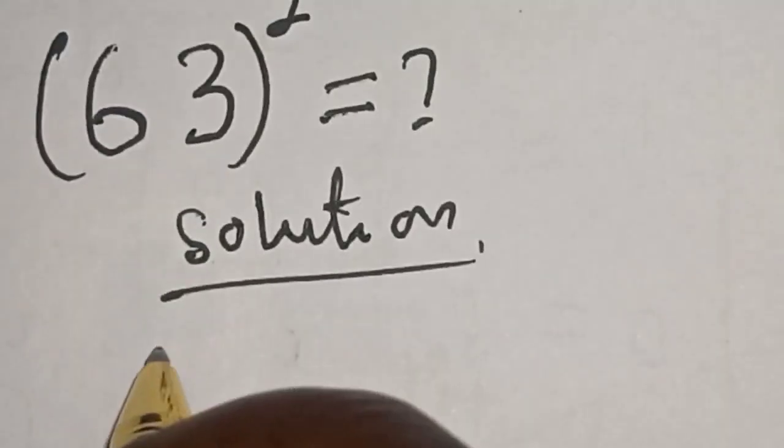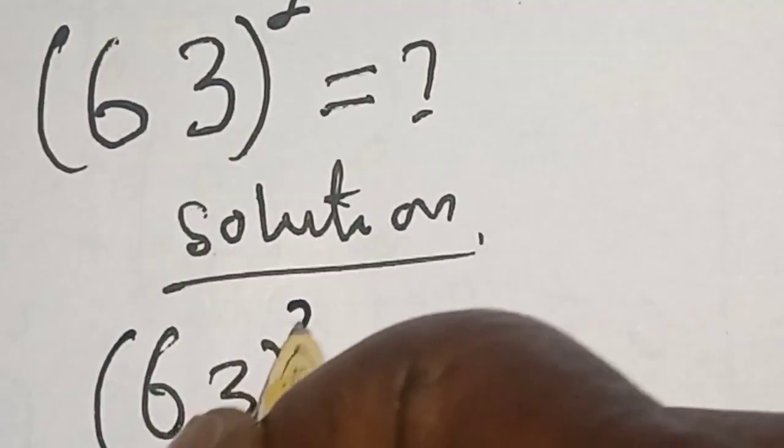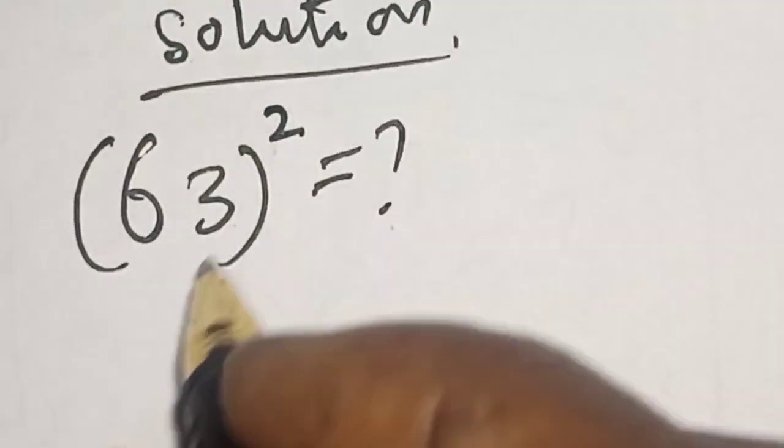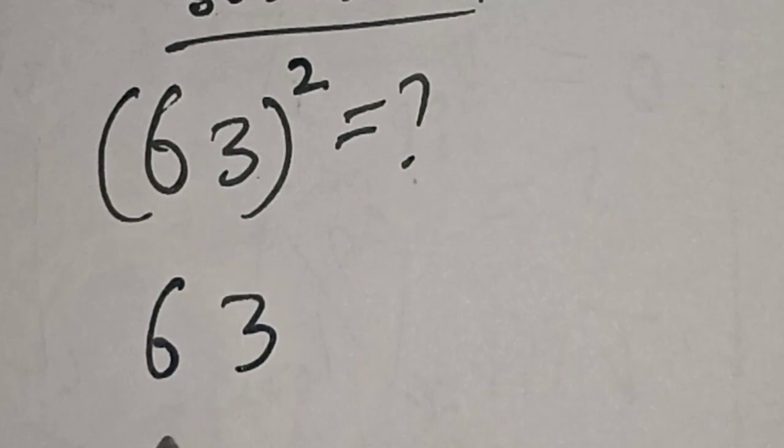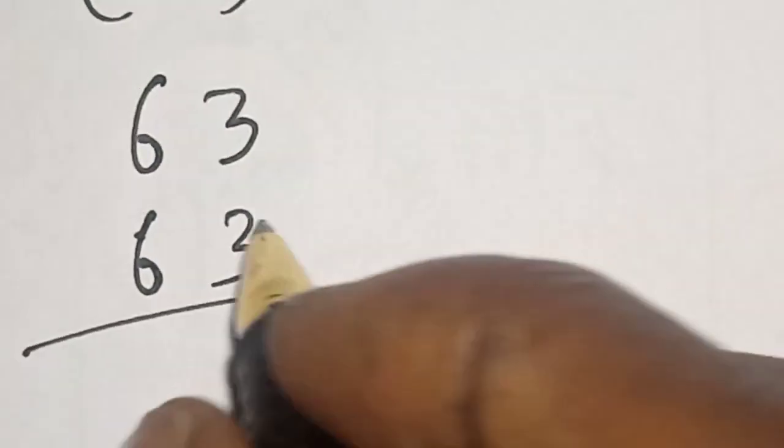Solution: We have the given question, 63 squared is equal to what? Generally we know that 63 squared is 63 multiplied by 63.